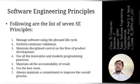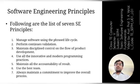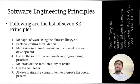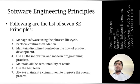Next is Software Engineering Principles. Below is the list of seven software engineering principles. Whenever we are going to develop a new software, we should follow these principles. If we follow the software engineering principles, then only our software is going to meet our requirements. The first principle is Manage Software Using the Phased Life Cycle. In future videos we are going to discuss the different life cycles that can be used to develop software, and those phased life cycles can be used to manage the software so that it is maintainable.